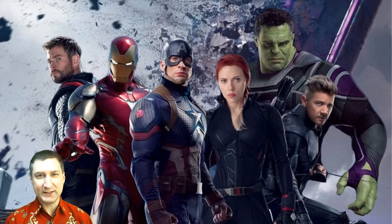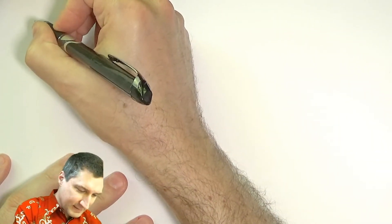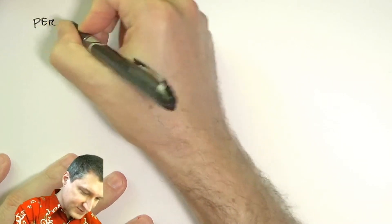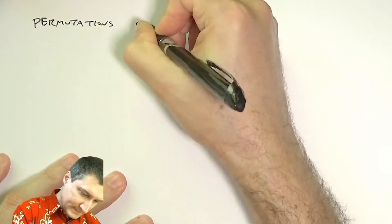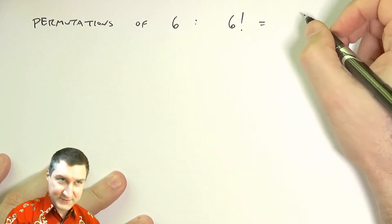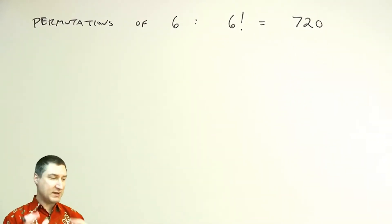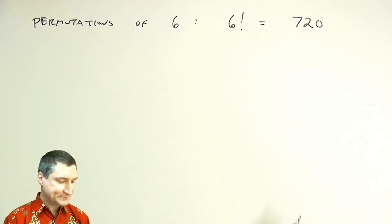Another example: the Avengers are posing for a movie poster and I want to know how many ways there are for these six people to line up left to right. This is a permutations question. The number of permutations of six people is 6! = 6×5×4×3×2×1 = 720. So there are 720 possible lineups where order matters.